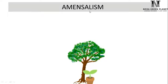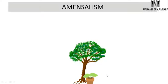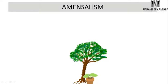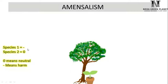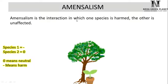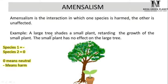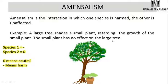Amensalism is observed in the case of tall trees. Tall trees block sunlight and inhibit the growth of small plants nearby. The small plant is negatively affected, but the tall plant does not derive any benefit from inhibiting the small plant — it remains unaffected. So amensalism is the interaction in which one species is harmed and the other is unaffected. For example, a tall tree shades a small plant, retarding its growth, while the small plant has no effect on the large tree.